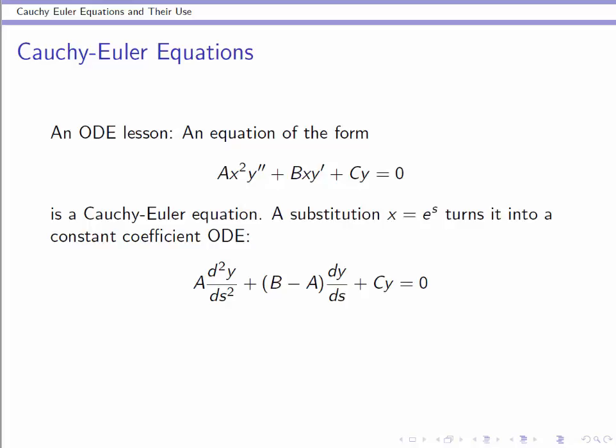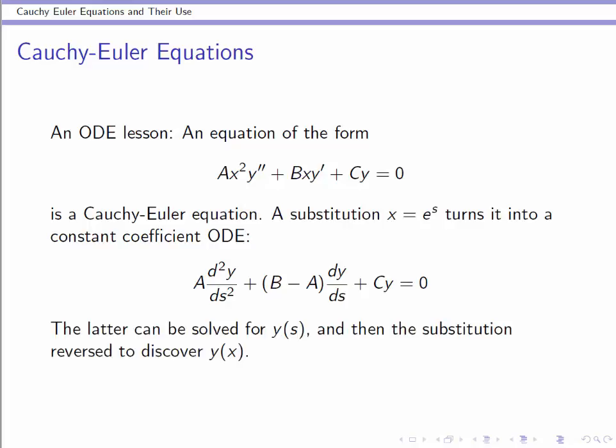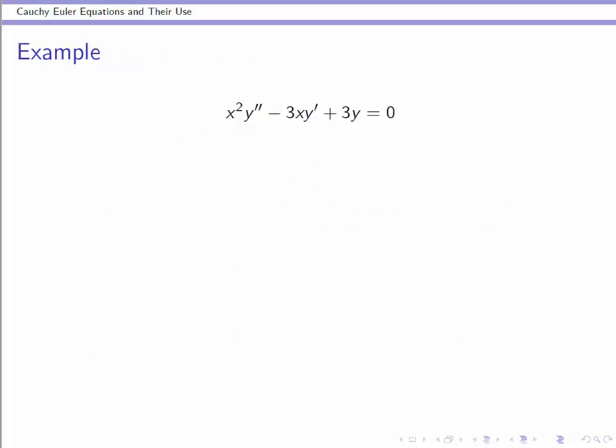that new equation would actually have constant coefficients. So it turns out that throwing in the substitution x equals e to the s, which will turn our independent variable from x's into s's, we change the Cauchy-Euler equation into a constant coefficient differential equation, and those we know how to solve. And then once we solve that new one, we revert back and undo the substitution to get back to the original variable.